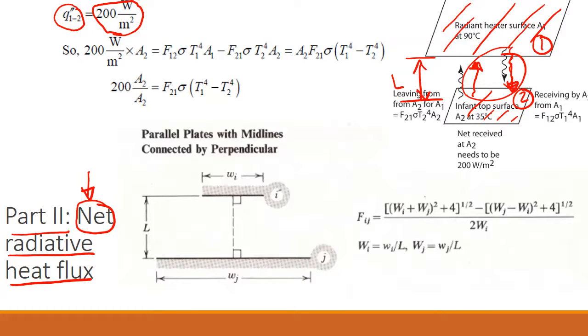It is the radiative exchange formula, and that is this Q double prime 1 to 2 times A2. This is the net amount from 1 to 2. When I plug in for Q double prime, it is made up of two things. One is how much energy is going out minus what is coming back in.